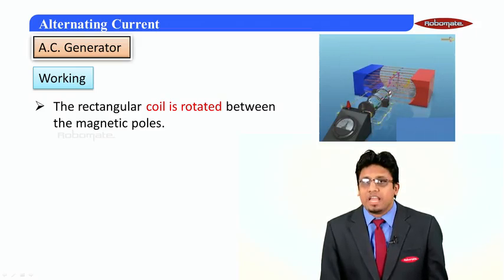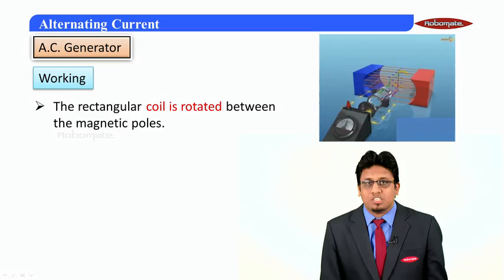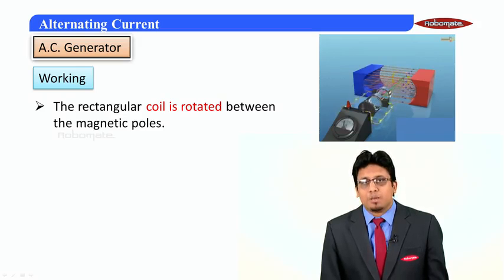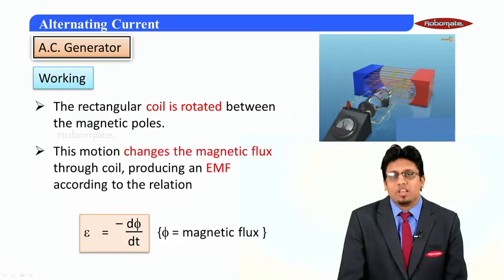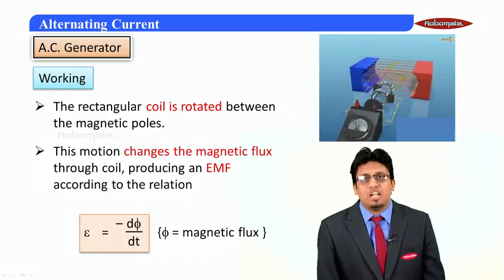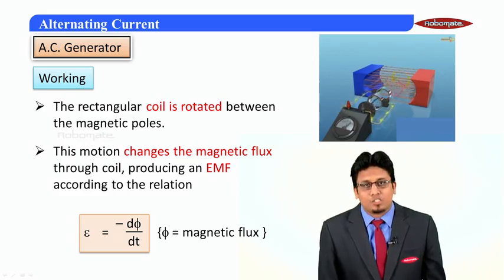Thus, producing an EMF which can be read according to the relation ε = -dφ/dt, where φ is the magnetic flux through the coil. Now, if we recall, the magnetic flux through a coil can be changed in three ways.